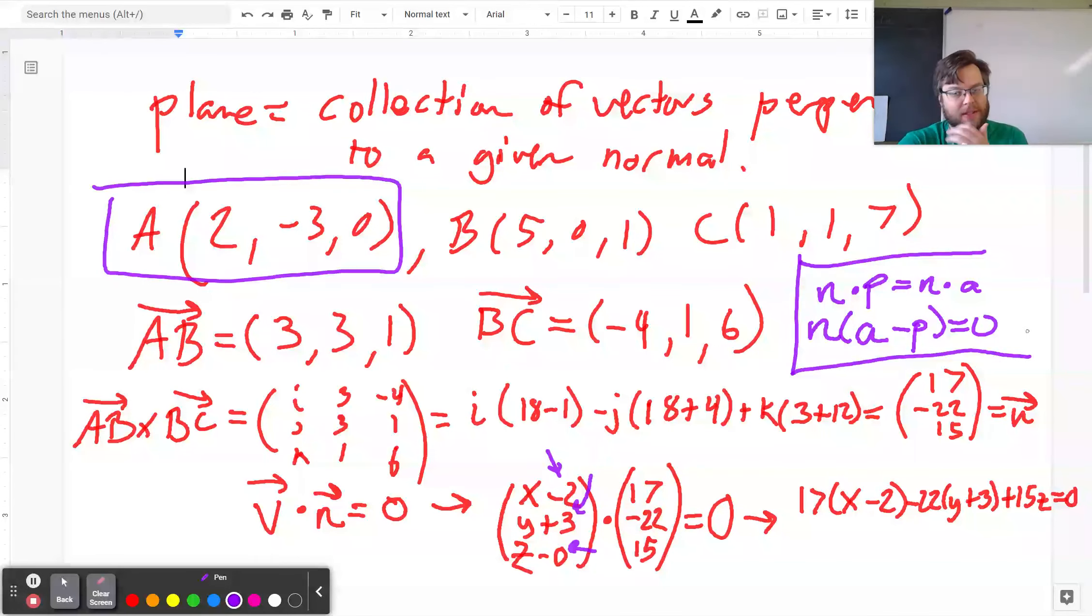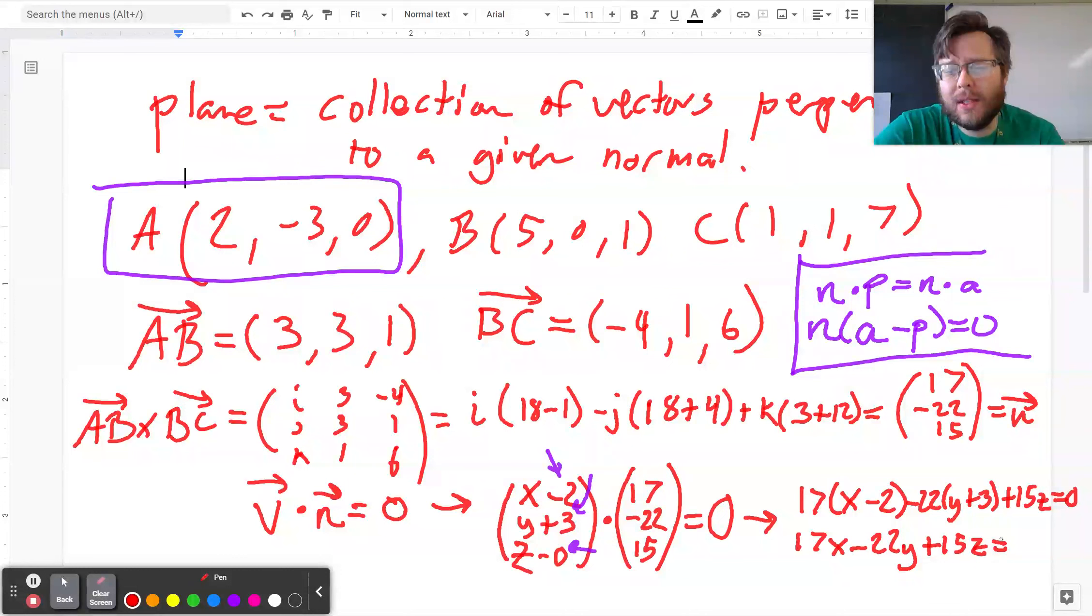So this is a nice way to get the equation of a plane. You can always also distribute everything out to obtain 17x - 22y + 15z equals, let's see, 17 times 2 is 34, 22 times 3 is 66, 34 and 66 makes 100.